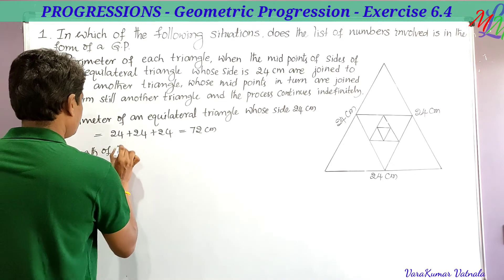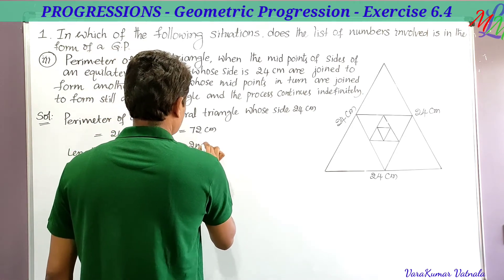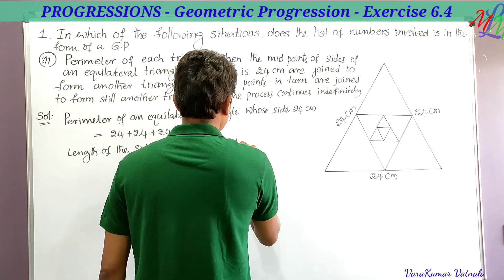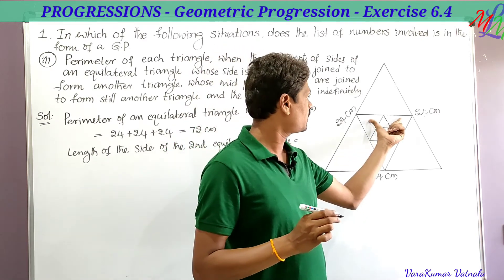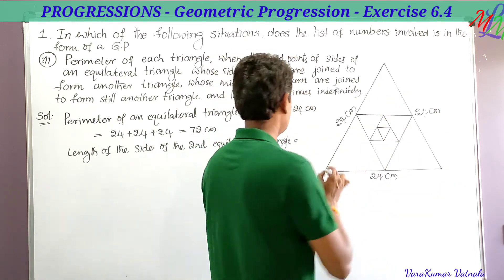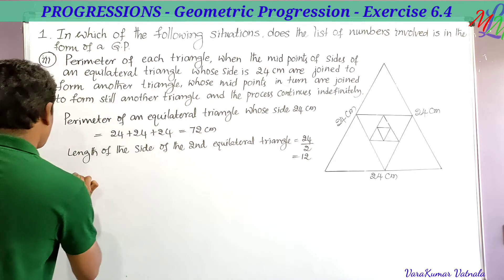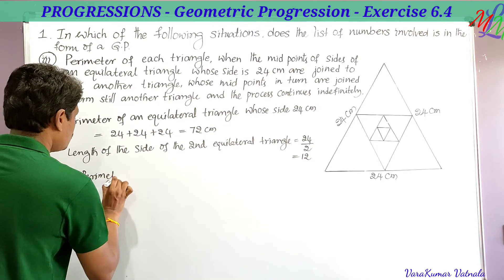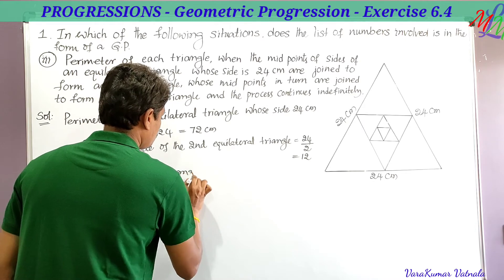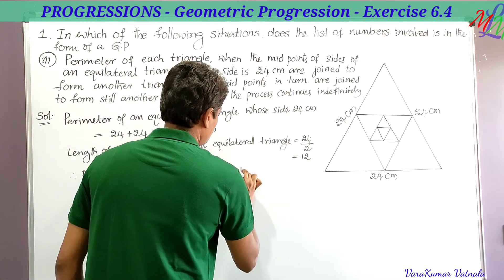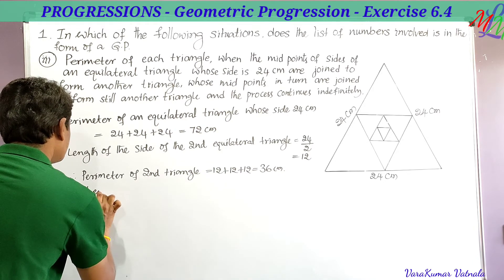The length of the side of the second equilateral triangle is half the length of the first, which is 24 divided by 2 = 12 centimeters. Therefore, the perimeter of the second triangle is 12 + 12 + 12 = 36 centimeters.